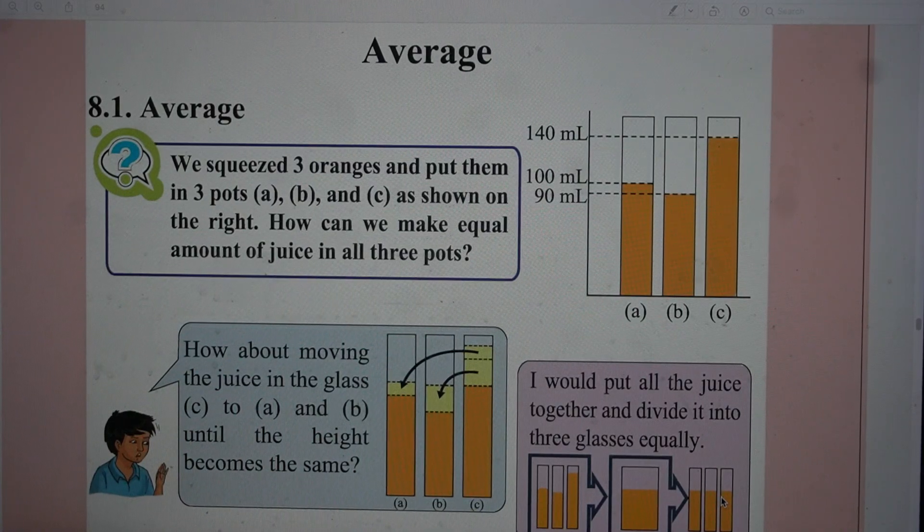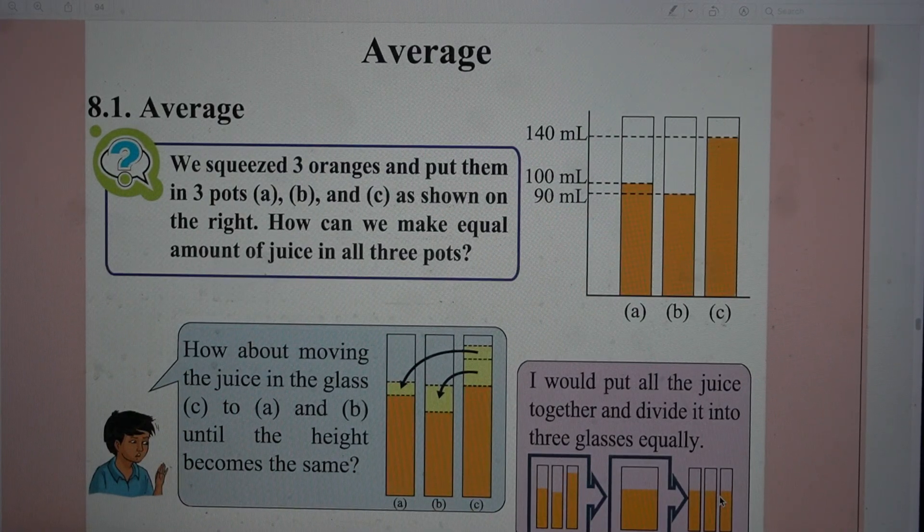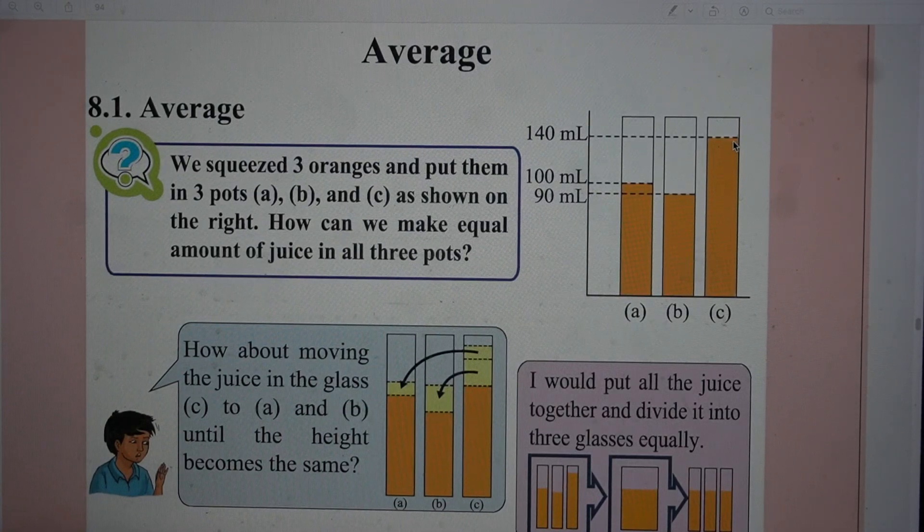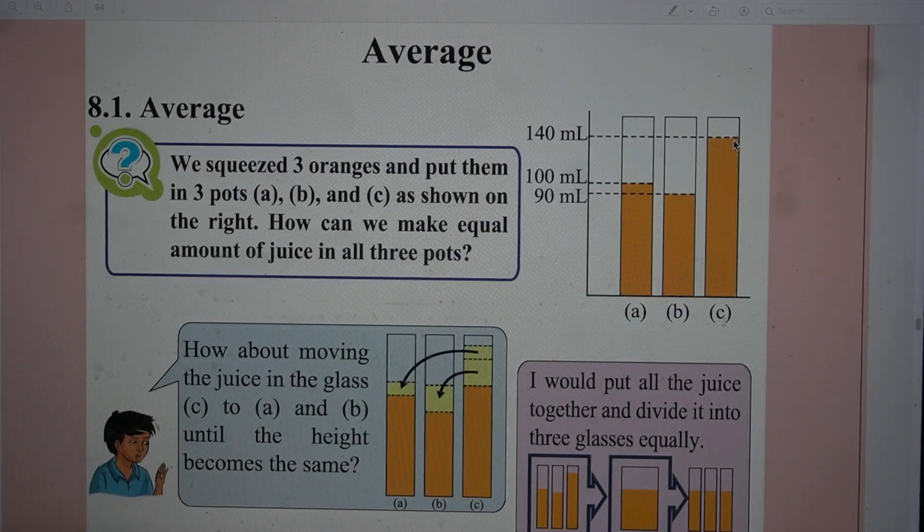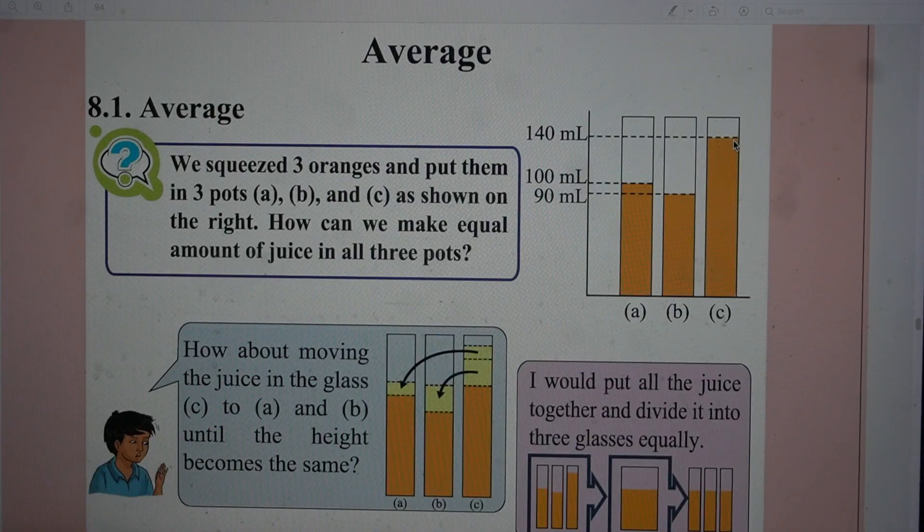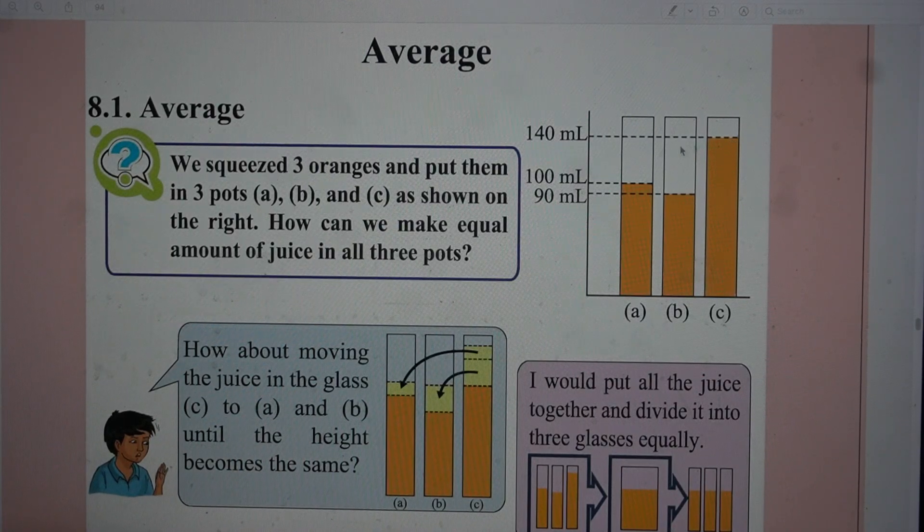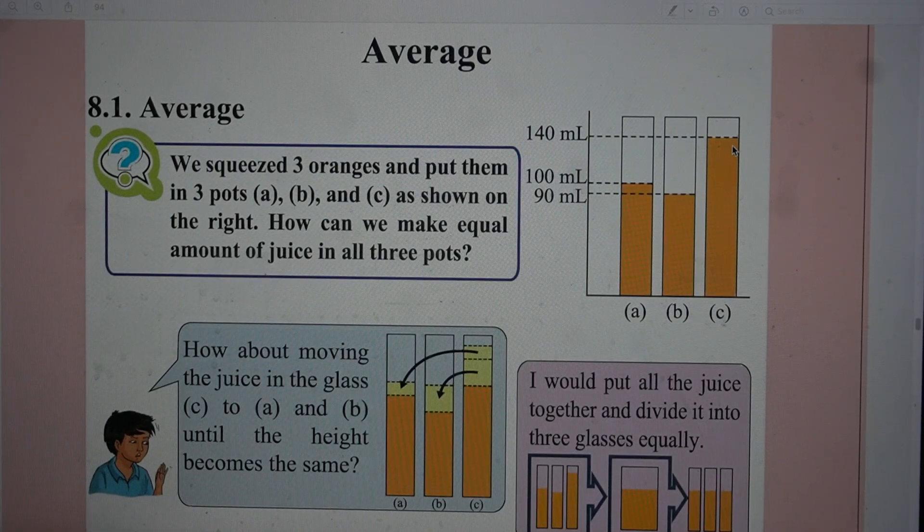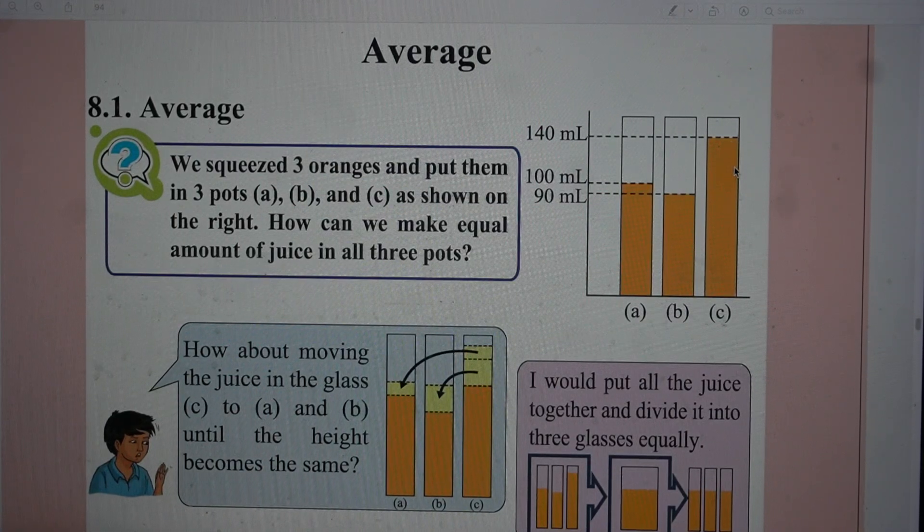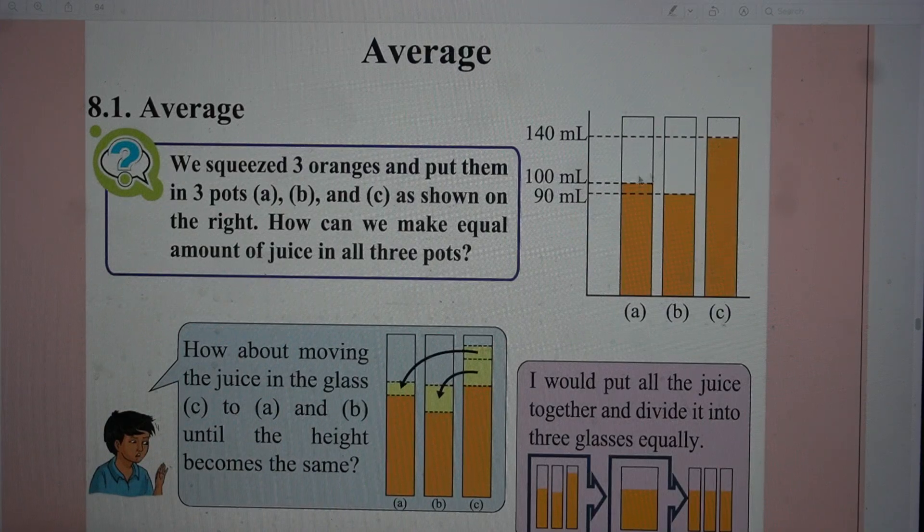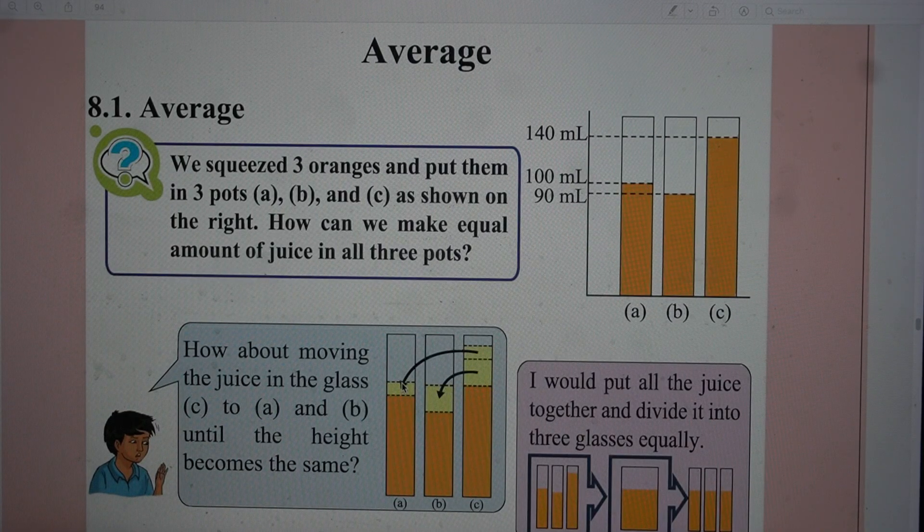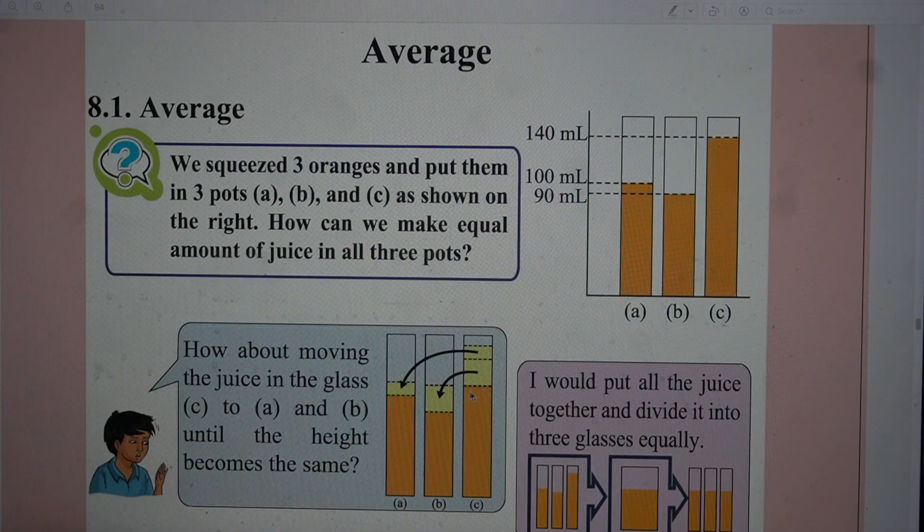And then you can pour this amount equally in these three glasses A, B, C. That is one way, the traditional way of doing. The other way is first to find out the glass where you have higher amount of juice. In this case it is 140 ml. Now you put this amount to the other two such that the juices are equal.